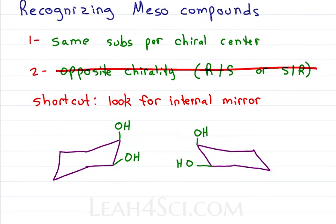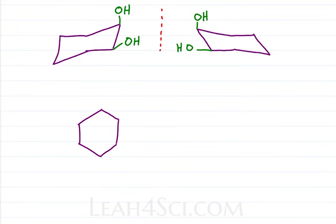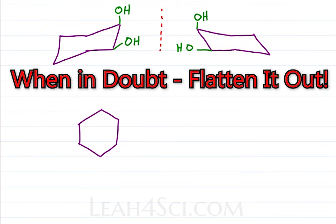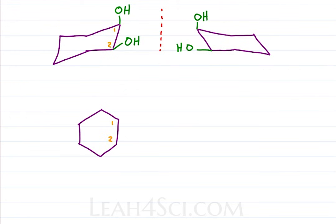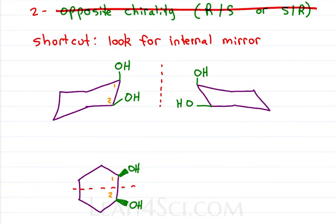Take these chair conformations, for example. The molecule has two OH groups, but we can't necessarily see an internal plane of symmetry. What I can tell is that the two molecules are mirror images of each other, and so they are potential enantiomers. When in doubt, flatten it out. If you didn't immediately recognize that the OH is going up means that they're internally symmetrical, just flatten it out. We'll make these carbons one and two, and put both OHs on a wedge, since they're coming up and out of the chair. And look at that, internal plane of symmetry, meso compound. Or you can go back to option two and find R and S on your chair conformation, or on your flattened structure. R and S with identical substituents once again confirms that this is a meso compound.